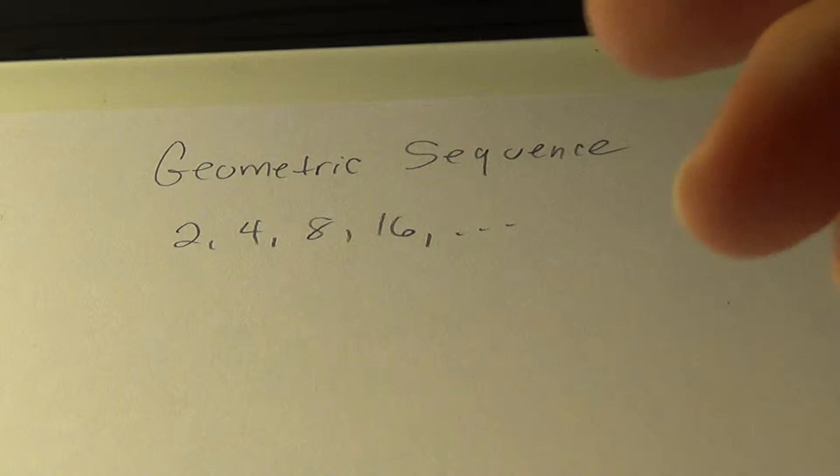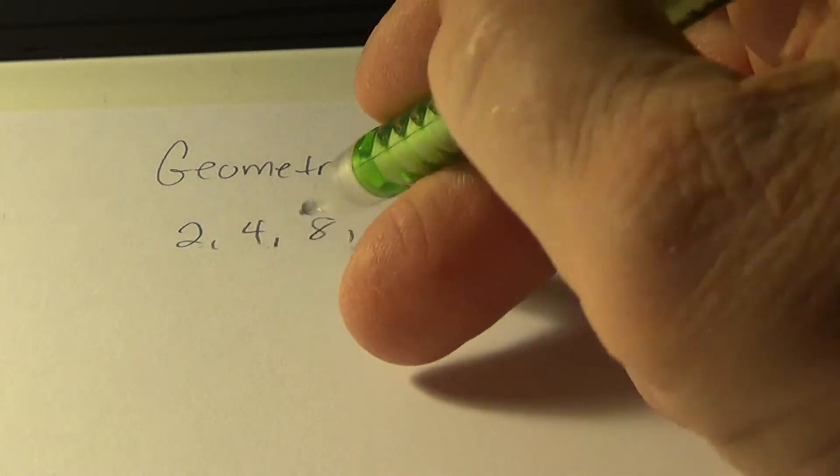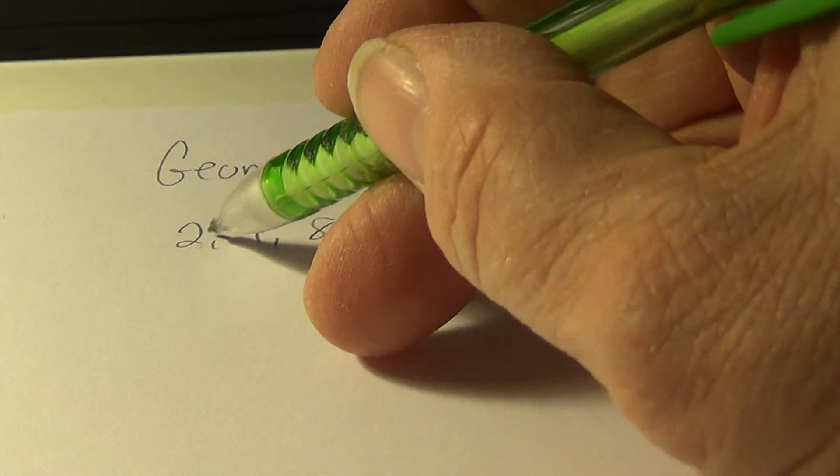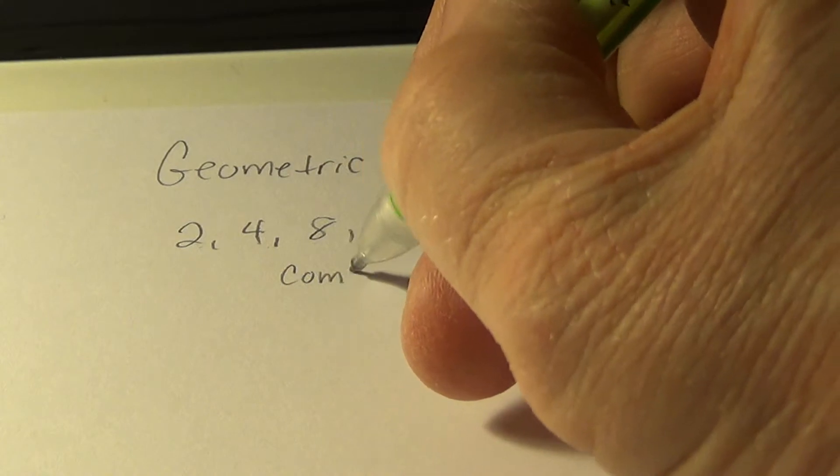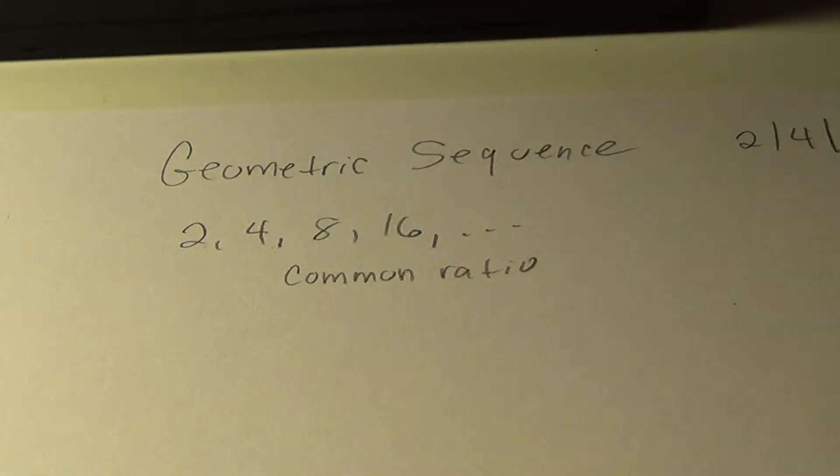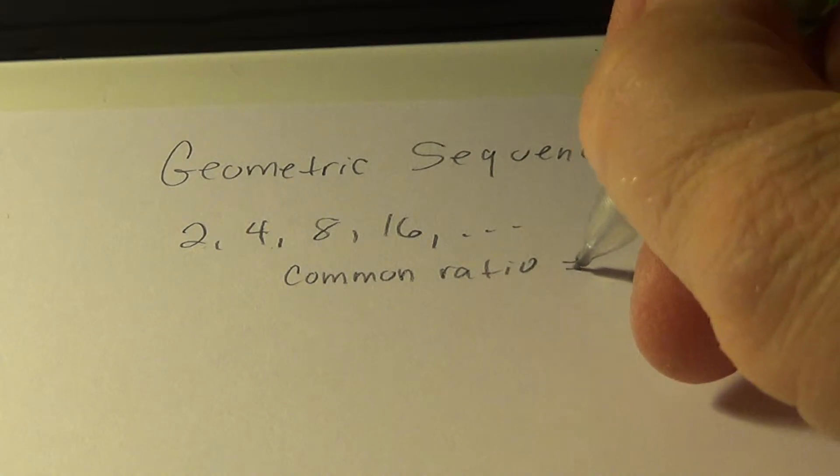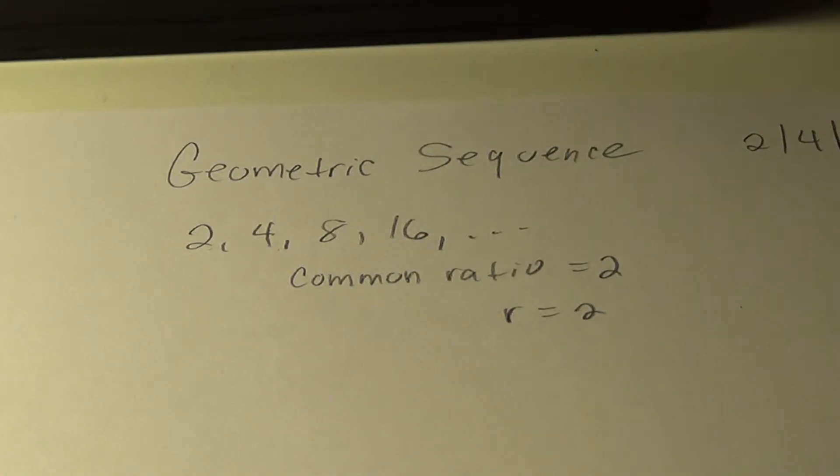When we have the number, and we can recognize that it's 2 in this case, that is multiplied by each number to get the following, we call that the common ratio. The common difference is what we saw with arithmetic sequence, but the common ratio is 2, and we use R for the symbol. R is 2.